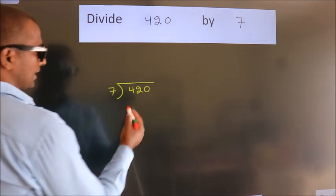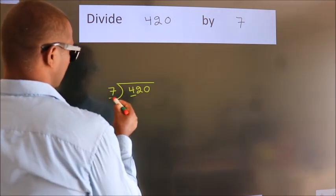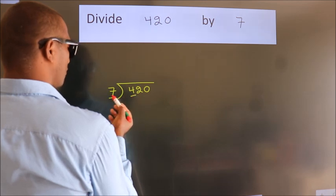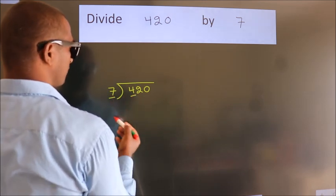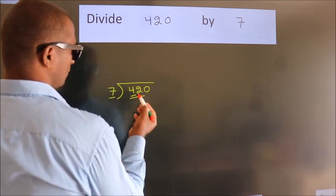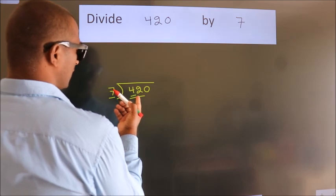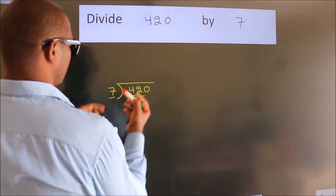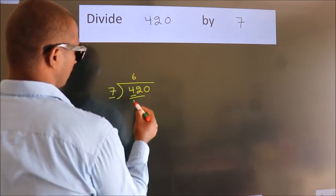Next. Here we have 4, here 7. 4 is smaller than 7, so we should take 2 numbers: 42. When do we get 42? In the 7 table, 7 times 6 is 42.